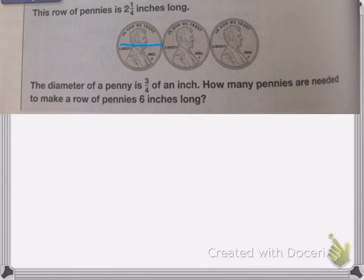So my problem is 6 divided by 3 fourths. So I'll show you the long way first and then the shortcut. So what we really need to figure out is how many pennies are in 1 inch. It told me how many are in 2 and a quarter inches. That doesn't help me.